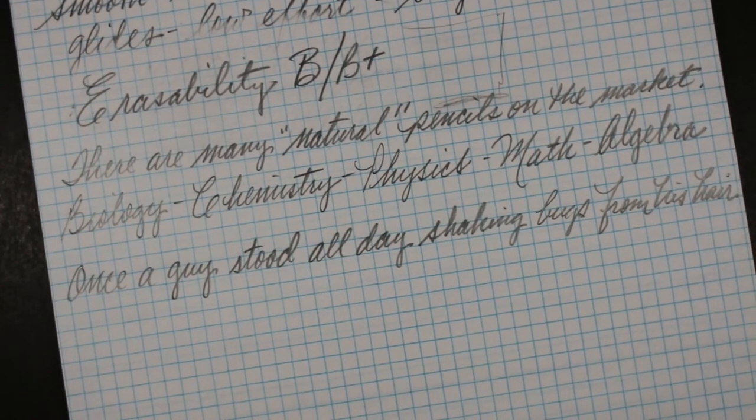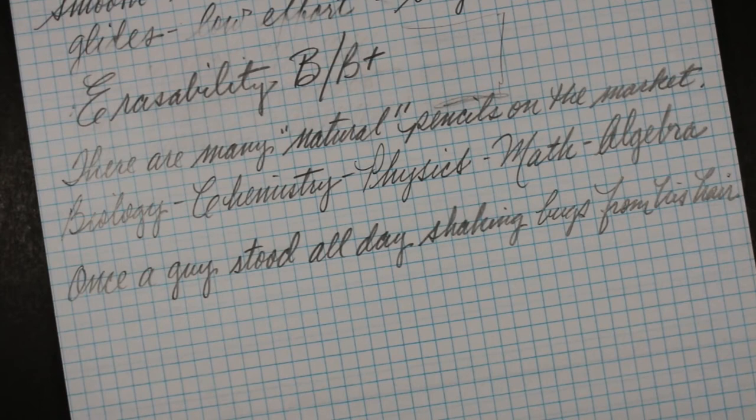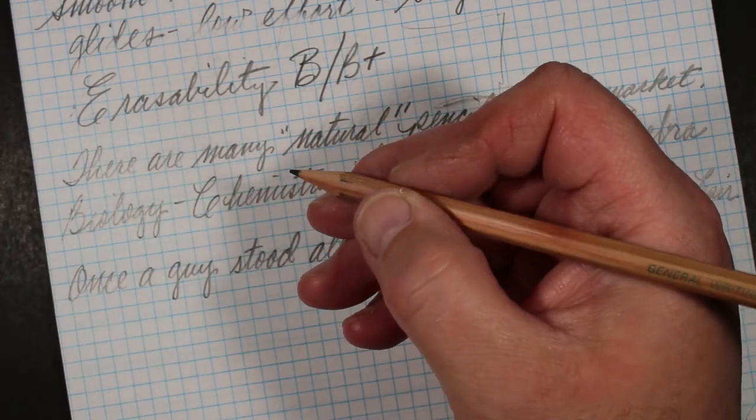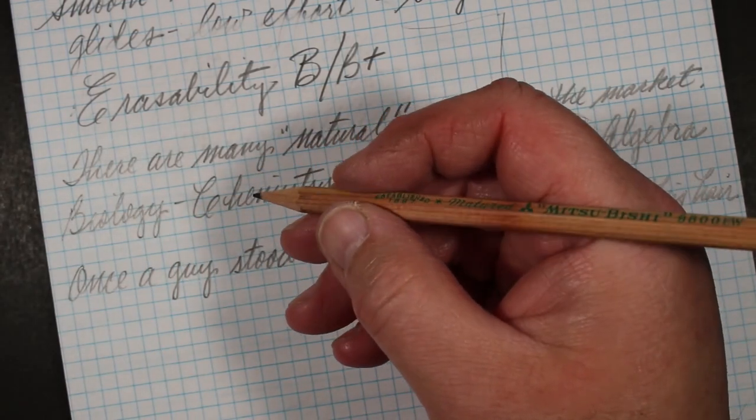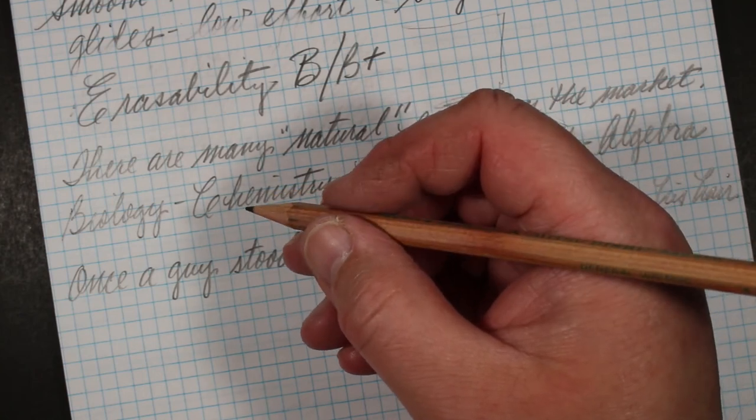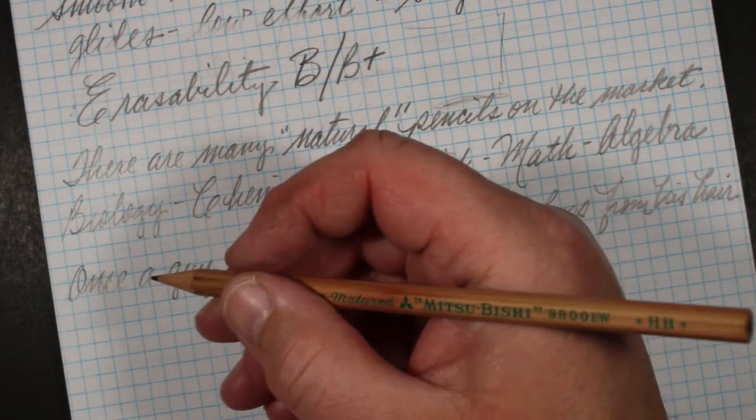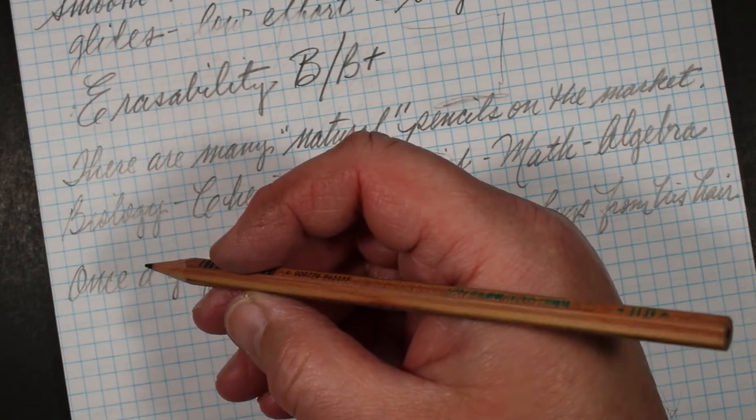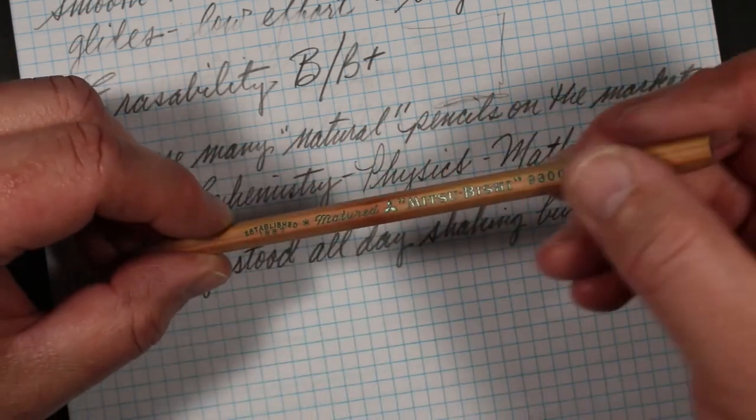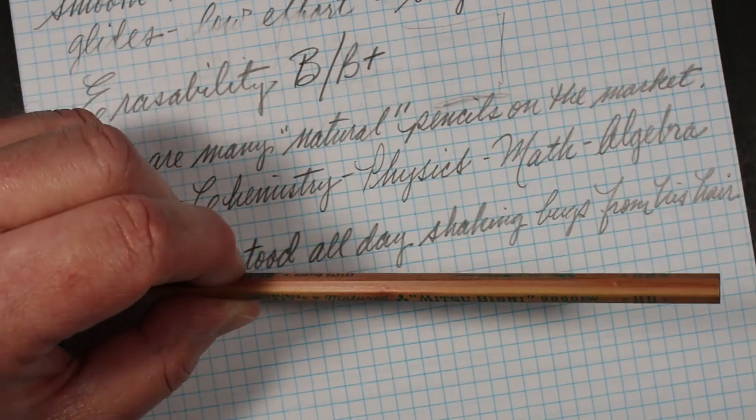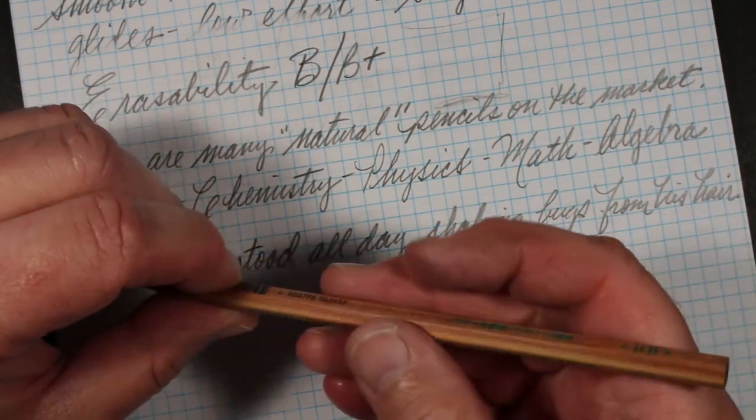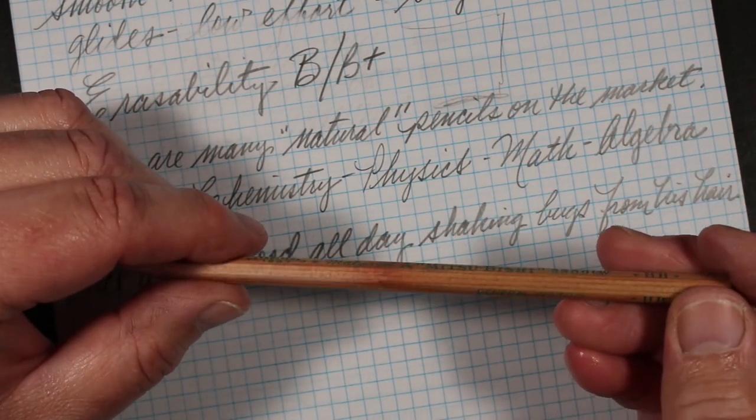This is a pencil that you want to have in your hand for long-haul writing. It is a comfortable pencil to hold. And for a long time I didn't really warm up to a lot of the natural pencils, but I have come to really like them. And in particular because there's no varnish or shellac or anything on the pencil, and it's just the raw wood.